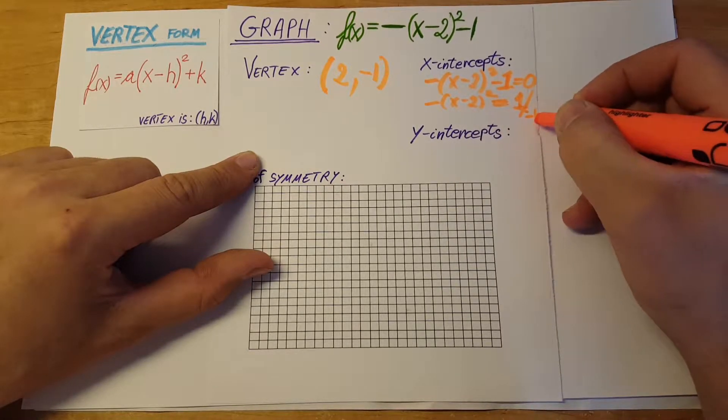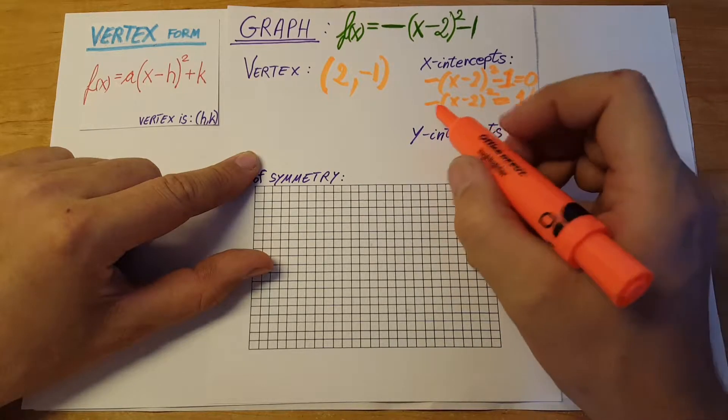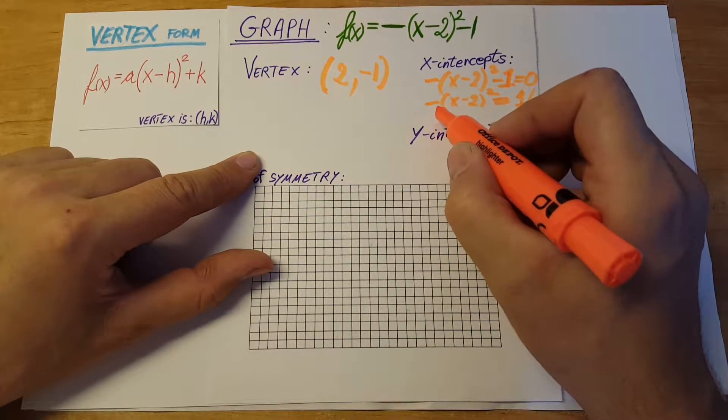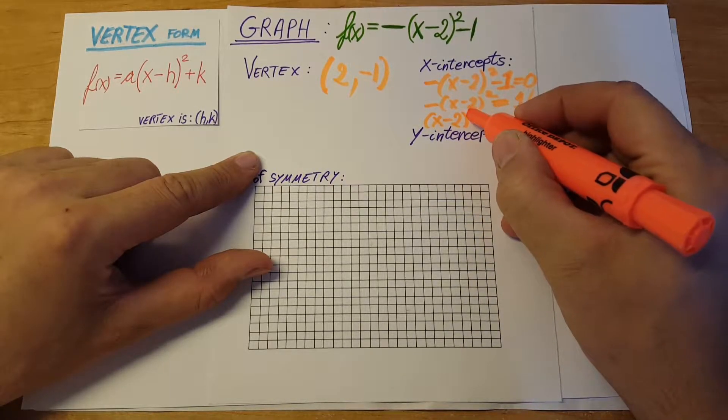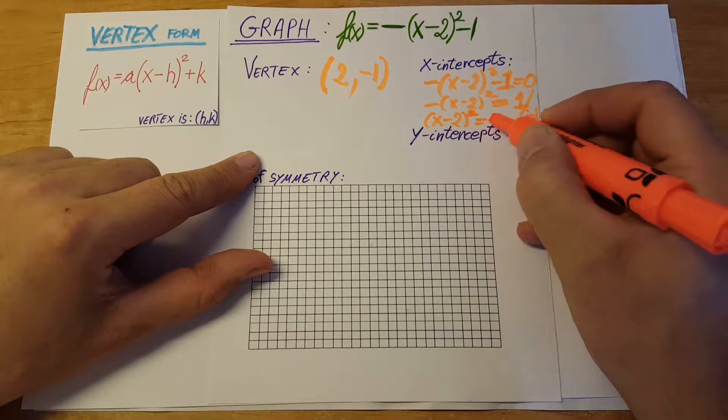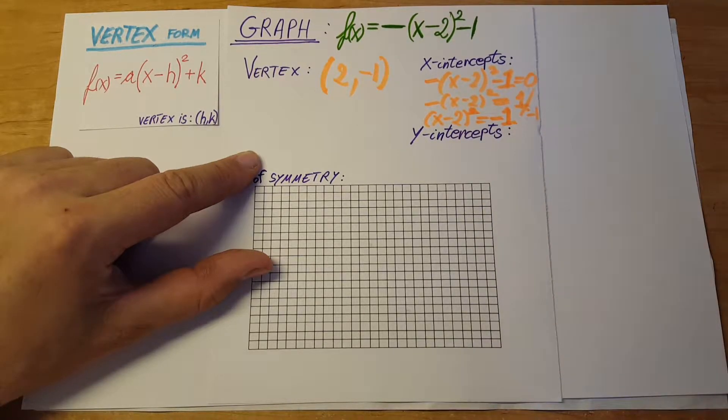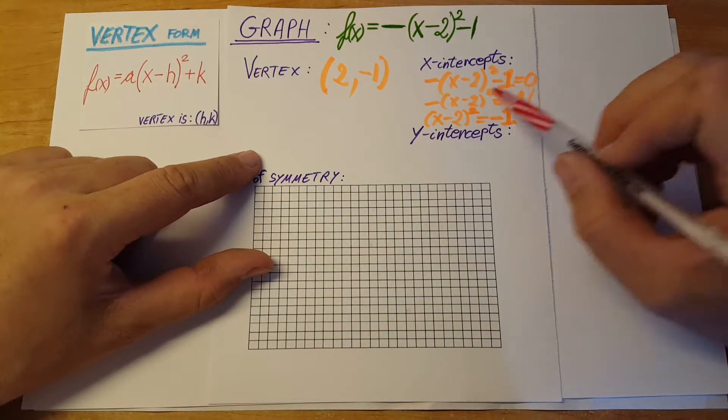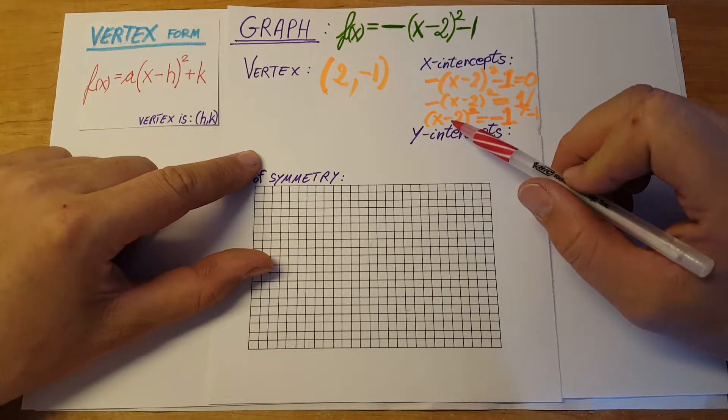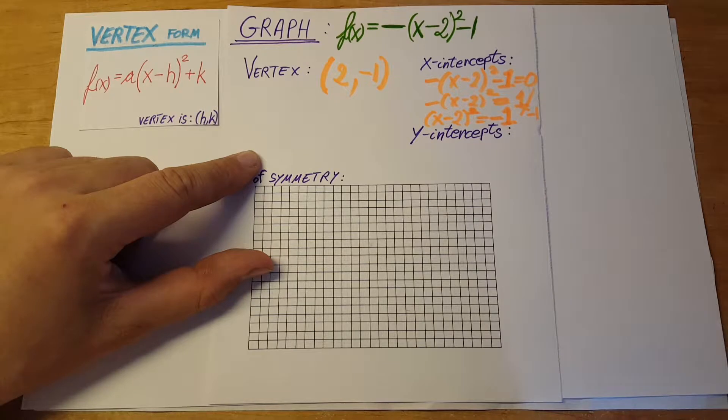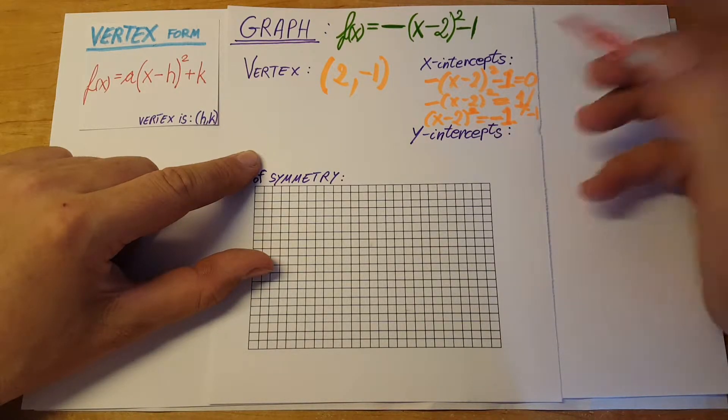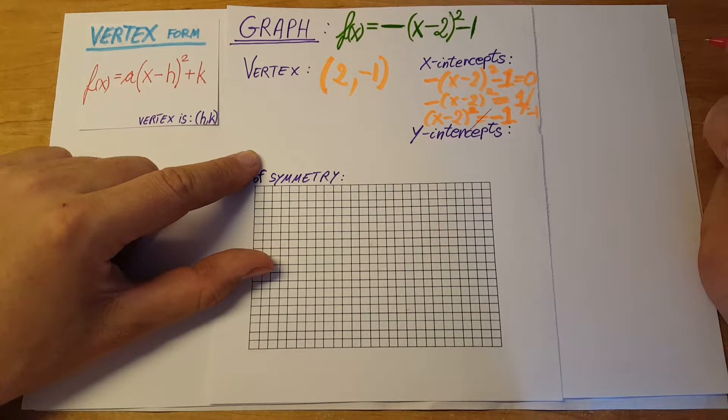And we get (x - 2)² = -1. Now, if we look at this, we can see that anything we raise to an even power will never be a negative value. So this is an impossible statement.